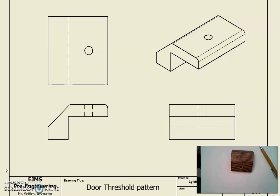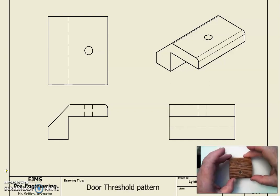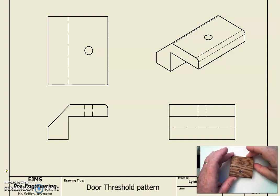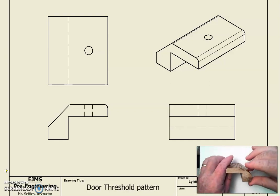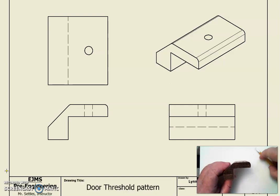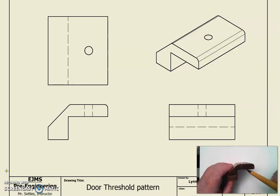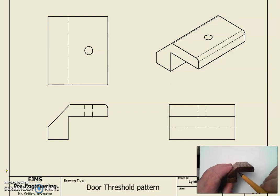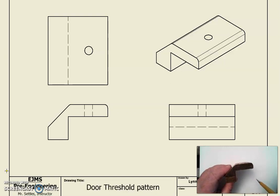If you look in the bottom corner at the live window, I want to show you this object — this is a section of a doorway threshold piece. If we rotate this around, I'm going to call this the front view of the object because this is the most characteristic shape. On the underneath side it's got this notched-out section, which would let this slip over a tile floor and transition into another room.